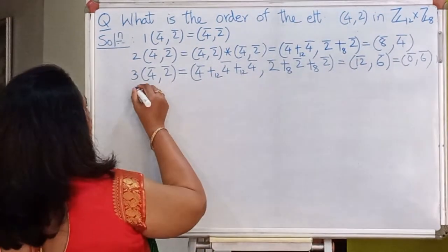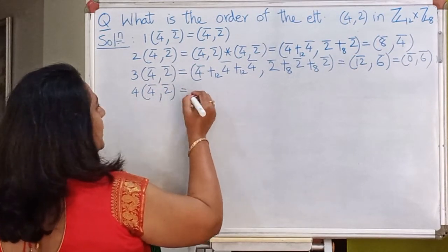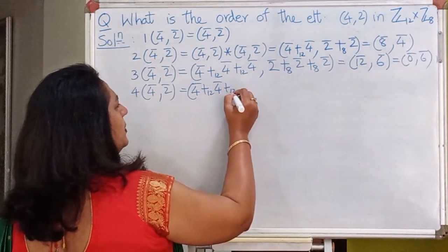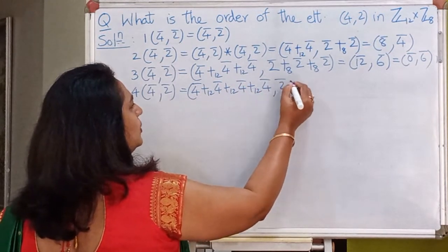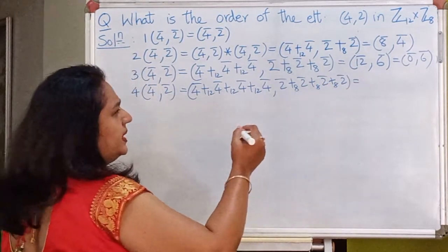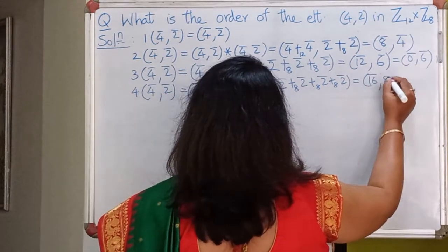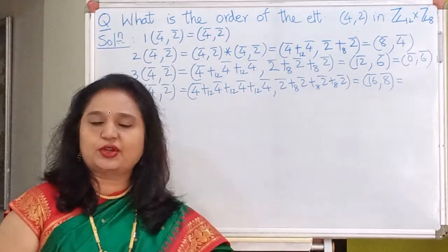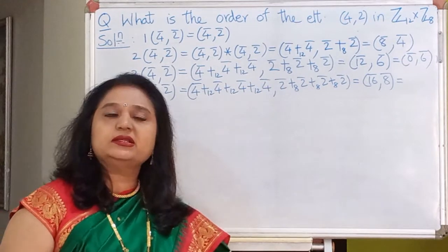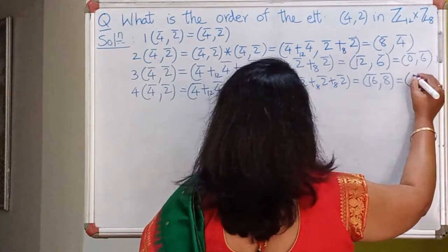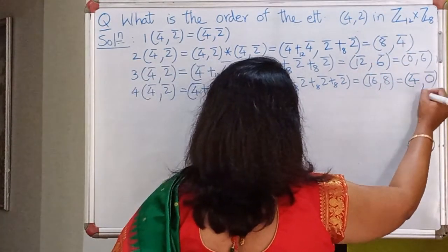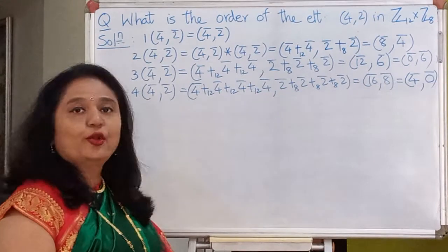Let us now find 4×(4̄,2̄). That gives 4̄+4̄+4̄+4̄ and 2̄+2̄+2̄+2̄, which is (16̄,8̄). The first element 16̄ in Z12 is 4̄, and the second element 8̄ in Z8 is 0̄. So 4×(4̄,2̄) = (4̄,0̄).